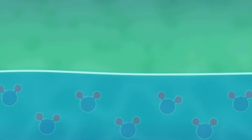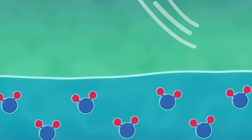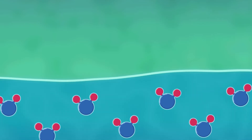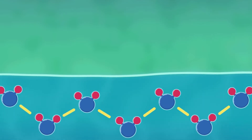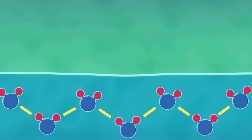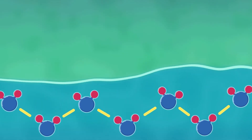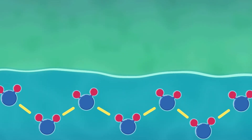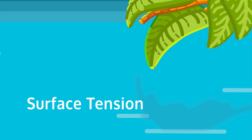On the pond surface, water molecules are unable to form hydrogen bonds with the air. Instead, they form hydrogen bonds with neighbouring water molecules, giving the surface elastic-like properties. This phenomenon is known as surface tension.